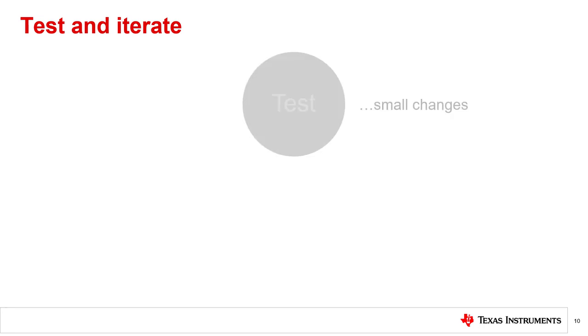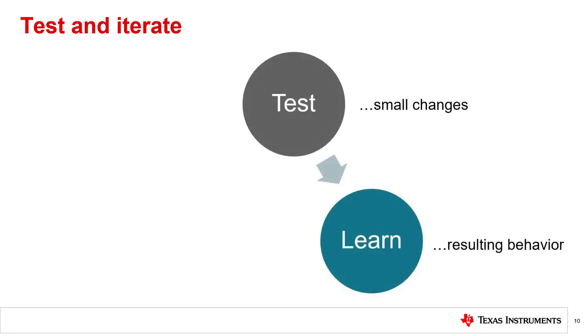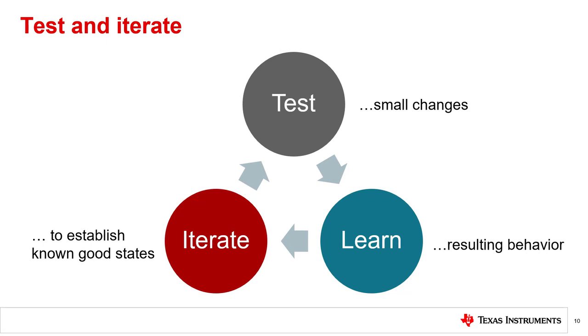This leads to our next debug concept: Test and Iterate. The basic premise is to test out small changes and learn system behavior from these changes in order to establish additional known good states that you can build upon and further test. Sometimes you may want to prioritize quick or trivial tests first to hasten debug efforts.